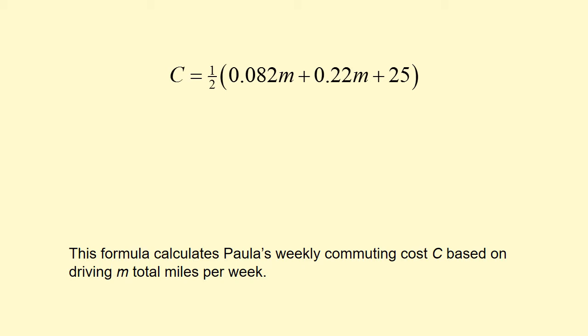The only unknown variable on the right-hand side is M. So if we plugged something in for M, we wouldn't have a formula anymore — we would just have C equals some kind of number. But what we can do is look at this right-hand side and clean things up a little bit.